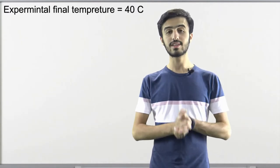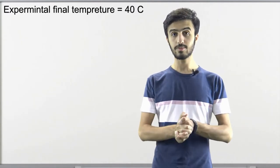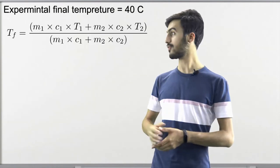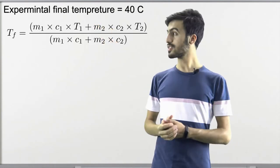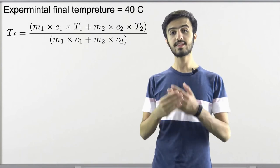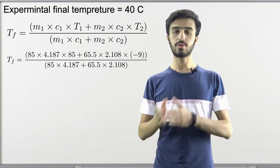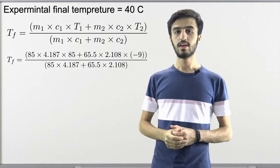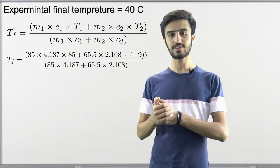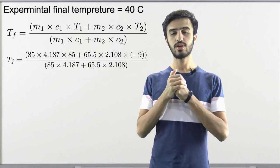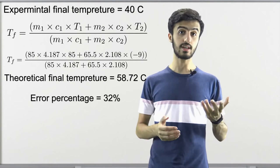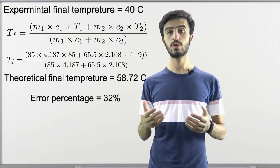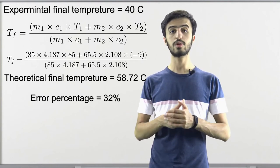The theoretical final temperature reached by our system was 40 degrees Celsius. The theoretical final temperature can be calculated using the following equation, which uses mass, specific heat, and temperature of both the ice and the hot water. The calculated theoretical final temperature was 58.72 degrees Celsius, and the deviation between our theoretical and experimental results was calculated to be 32%.